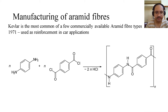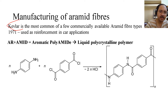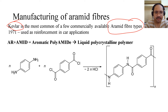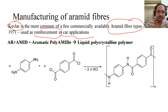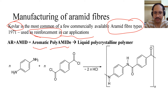Kevlar is the most common of the commercially available aramid fiber types. We have heard the name Kevlar fiber and Kevlar composite, but these are nothing but derivatives of aramid fiber — a type of aramid fiber. In 1971 it was first used in car applications as a reinforcement. The word 'aramid' comes from aromatic polyamide — do not forget this. Aramid is an aromatic polyamide, which is a liquid polycrystalline polymer.